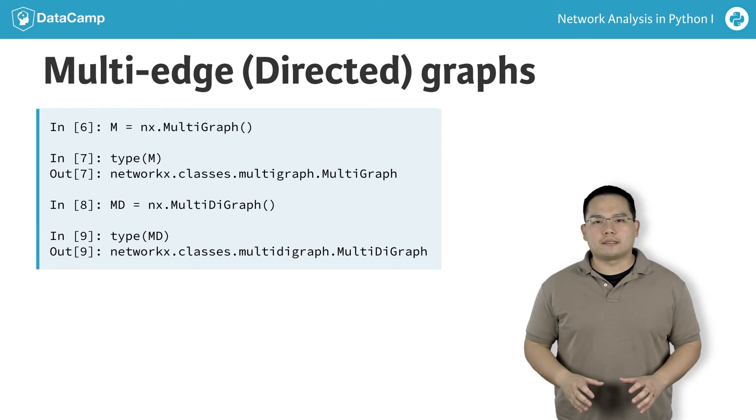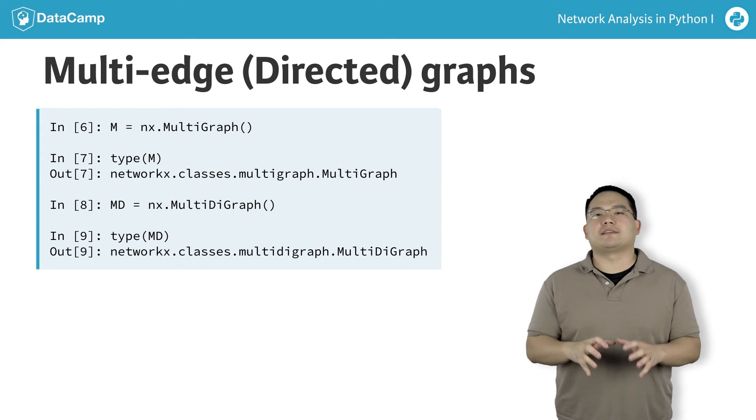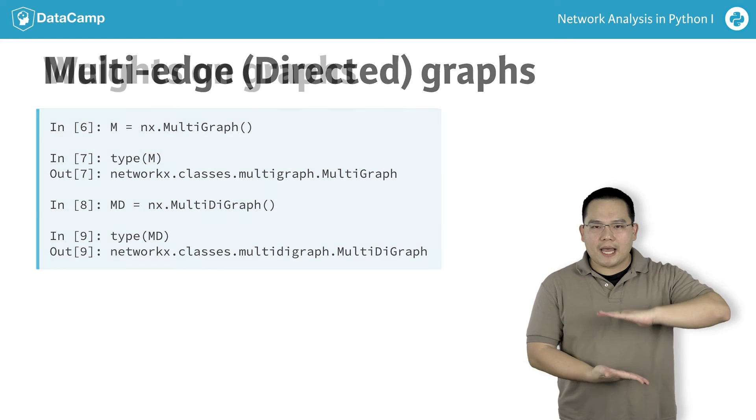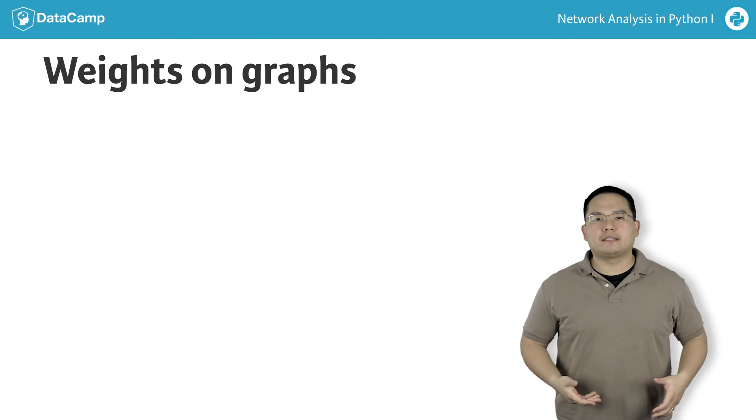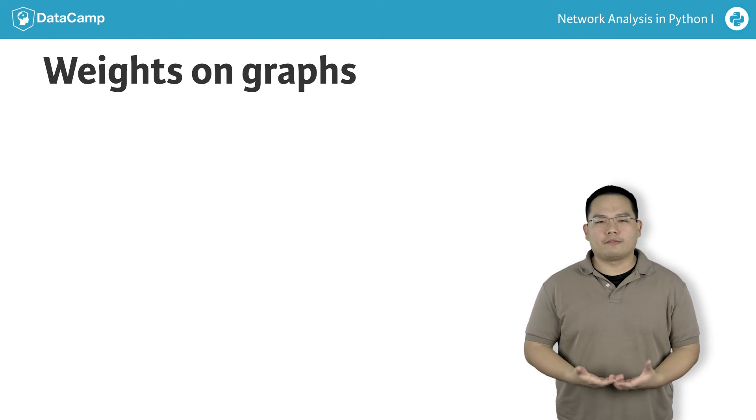Sometimes, for practical reasons, it may be too memory-intensive to model multiple edges per pair of nodes, and so one may choose to collapse the edges into a single edge that contains a metadata summary of the original.